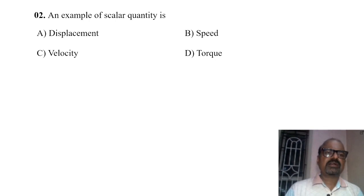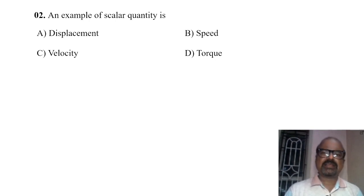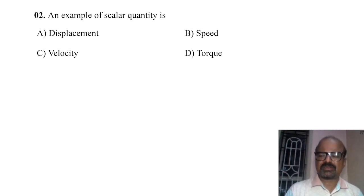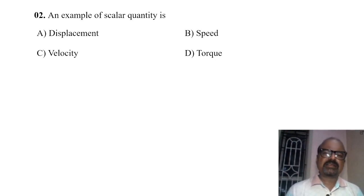Next, an example of a scalar quantity. The options are displacement, speed, velocity, and torque. The answer is speed — it is a scalar quantity.